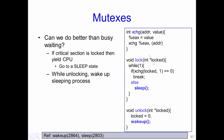Essentially, instead of doing busy waiting as is done in spin locks, in mutexes we put the entire process into a sleep state. The process will continue to be in a sleep state until it is woken up, and when it is woken up it tries the lock again, and if it achieves the lock it enters into the critical section.